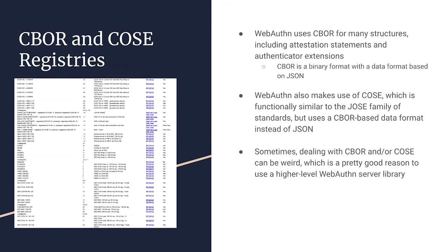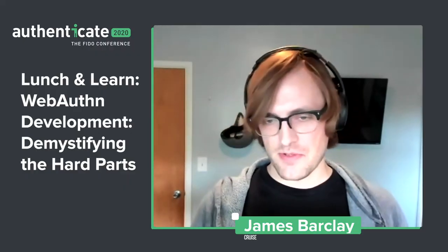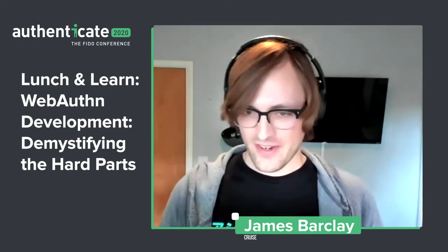Another reason to use a WebAuthn library: WebAuthn uses CBOR for many structures, including attestation statements and authenticator extensions. CBOR is a binary data format with a data model based on JSON, but it also makes use of COSE, which is functionally similar to the JOSE family of standards. If you're familiar with JWT, JWS, or JSON web signatures, it's similar but uses a different data model. Dealing with CBOR or COSE can get weird — I was annoyed for at least a couple of days about negative integers representing signature algorithm and hash function combination pairs.